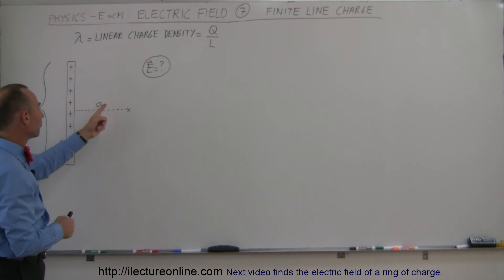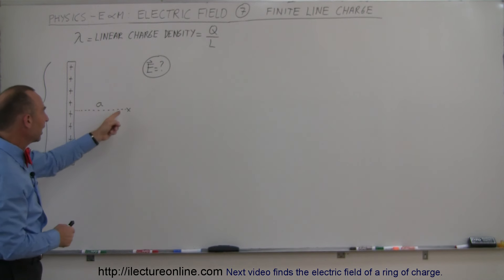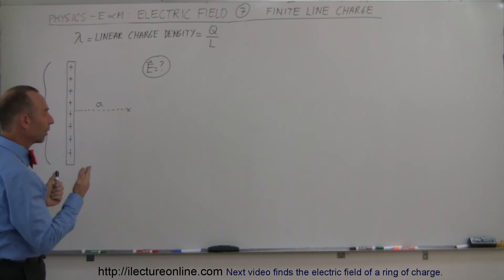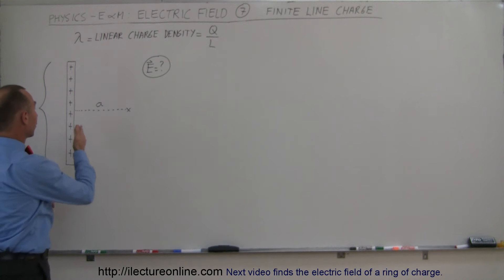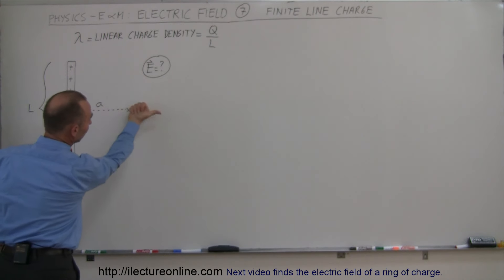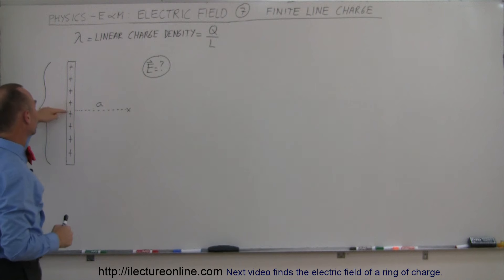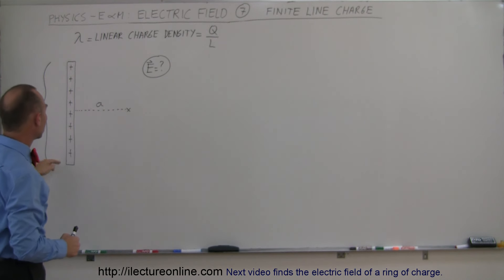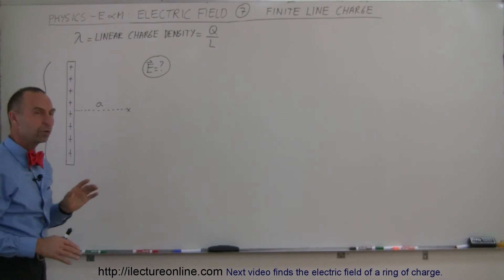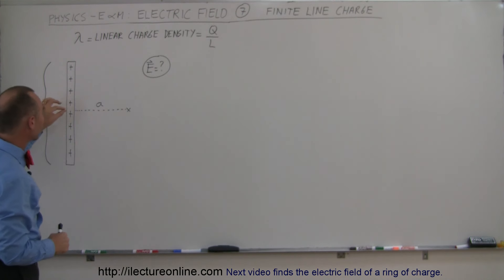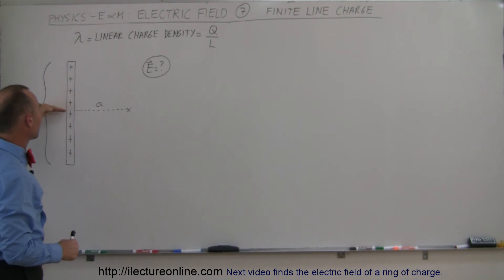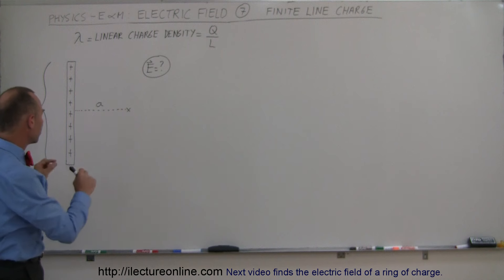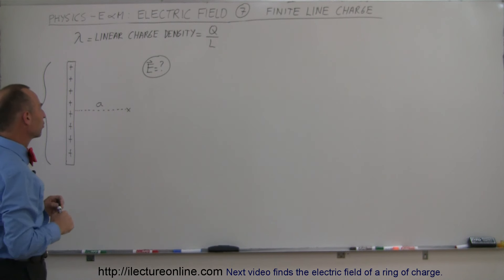At some distance A away from the object, we want to know what the electric field strength is and what the direction of the electric field is. Since this is a positive charge, we can assume the direction will be to the right. We're also going to assume that this point is exactly halfway between one end and the other — the easier case first, and from there you can figure out a different location as well.